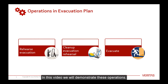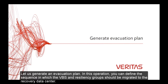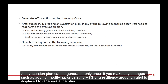In this video, we will demonstrate these operations. Let's generate an evacuation plan. In this operation, you can define the sequence in which the VBS and resiliency groups should be migrated to the recovery data center. An evacuation plan can be generated only once. If you make any changes, such as adding, modifying, or deleting VBS or resiliency group, an alert is displayed to regenerate the plan.